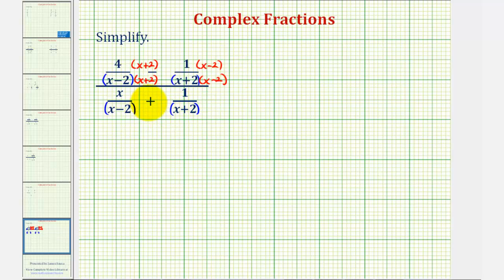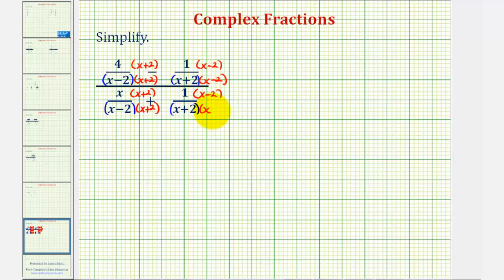Looking at the bottom, the common denominator is still going to be the same — the quantity x minus two times the quantity x plus two. The first fraction is missing a factor of x plus two, so we'll multiply by x plus two over x plus two, and the second fraction is missing a factor of x minus two, so we'll multiply by x minus two over x minus two.